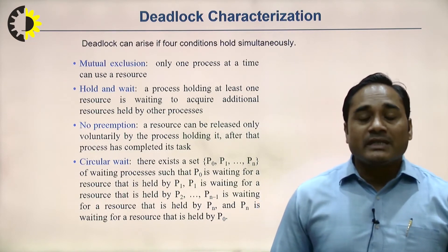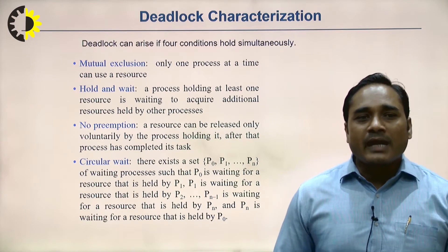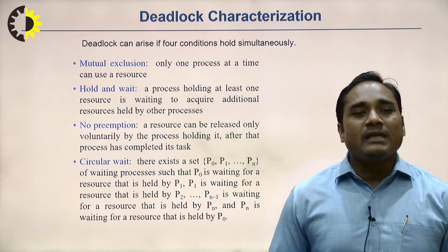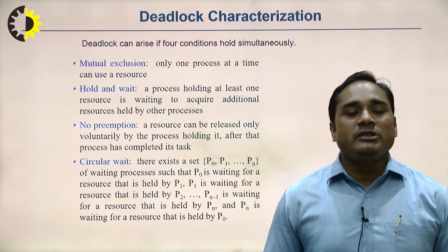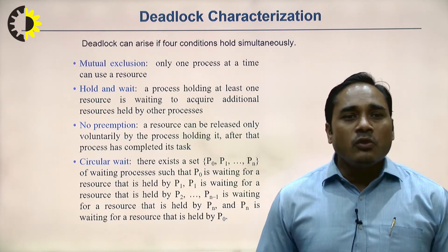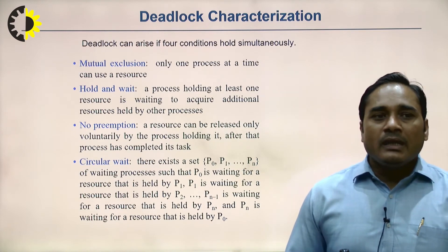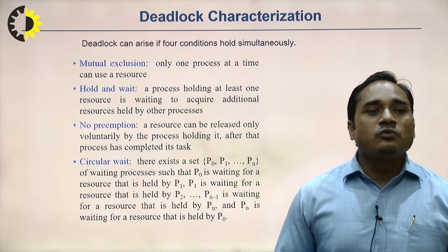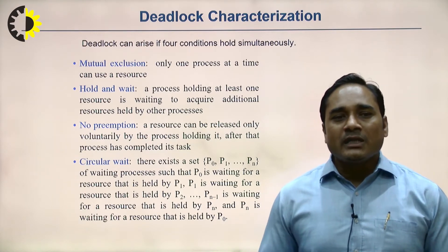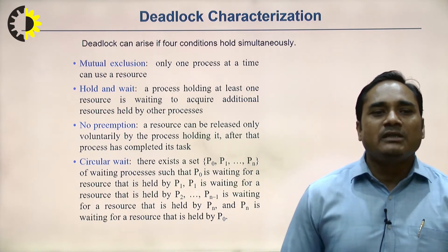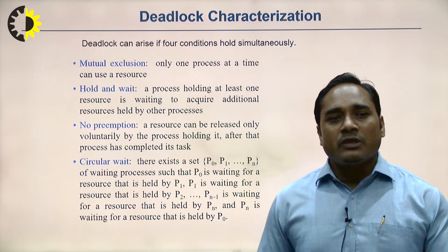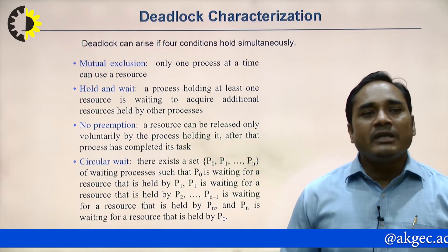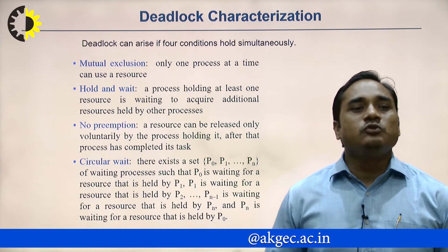Deadlock characteristics are very important. Deadlock can arise if four conditions hold simultaneously. The first condition is mutual exclusion: only one process at a time can use a resource. The second condition is hold and wait: a process holding at least one resource is waiting to acquire additional resources held by other processes.